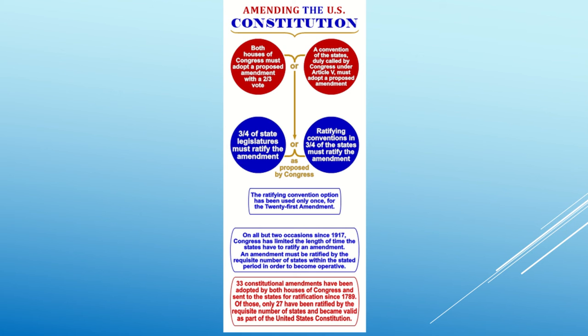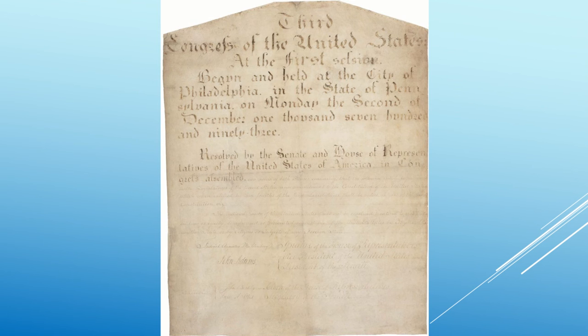The first ten amendments were added in 1791, and later amendments introduced such far-reaching changes as ending slavery, creating national guarantees of due process and individual rights, granting women the right to vote, and providing for a direct popular election of U.S. senators.